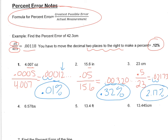Let's do one more example. There's two numbers after the decimal point, so our greatest possible error is 0.005. We're going to divide that by the actual measurement, which is 6.57 pounds. So 0.005 divided by 6.57.